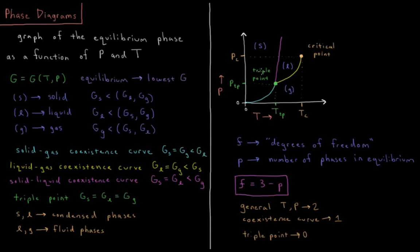We can describe how many phases are in equilibrium using the following equation. F is the number of degrees of freedom — the number of thermodynamic parameters we can change independently without changing what part of the phase diagram we're on. P is the number of phases in equilibrium. The equation is F = 3 − P. In general, there is one phase in equilibrium, so F = 3 − 1 = 2, meaning for a general temperature and pressure you can alter either temperature or pressure and remain in that phase.